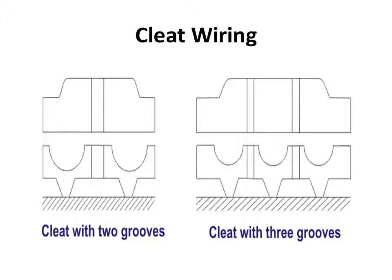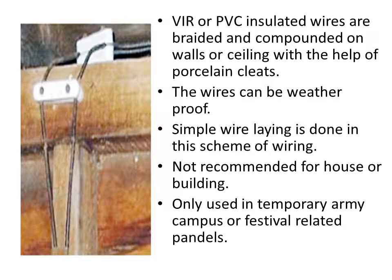In cleat wiring, cleats have grooves. A cleat with two grooves is used for two wires — phase and neutral. A cleat with three grooves is used for three wires — phase, neutral, and earth. Vulcanized Indian rubber or PVC insulated wires are braided and compounded, and fixed on walls or ceiling with the help of porcelain cleats.